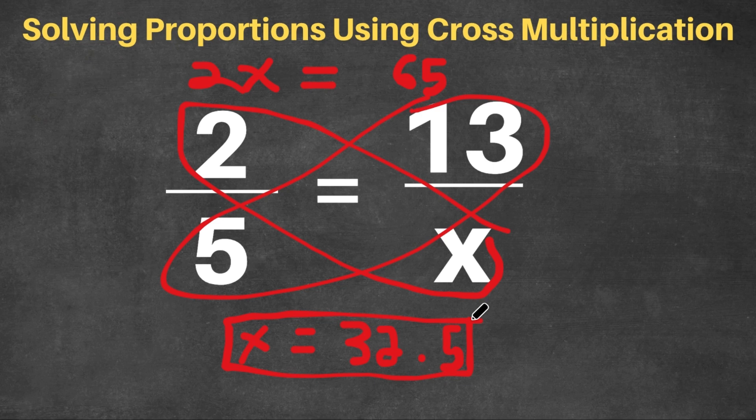And once you get into harder proportions, you're going to see that many of your answers aren't going to be decimals. So just if you see a decimal, don't think that you're wrong because many proportions have decimals as their answers.